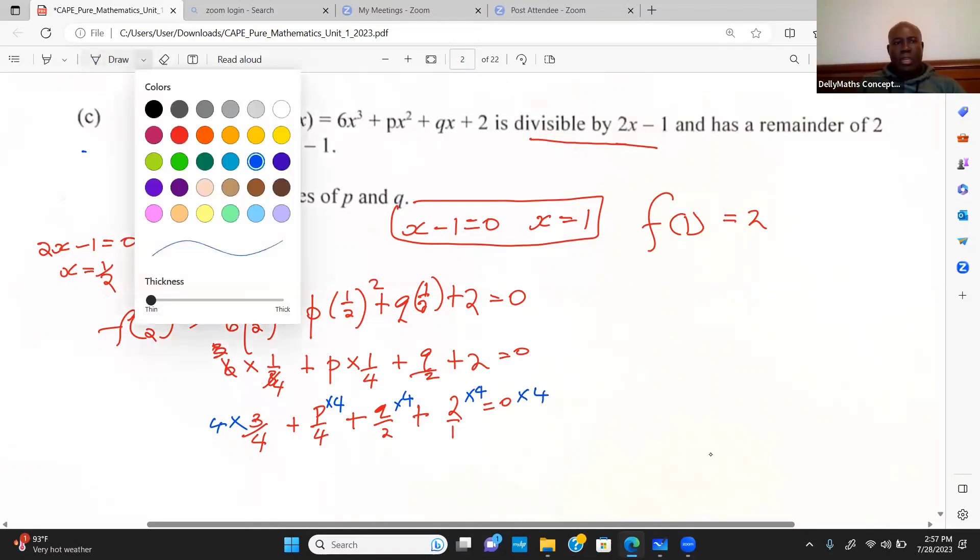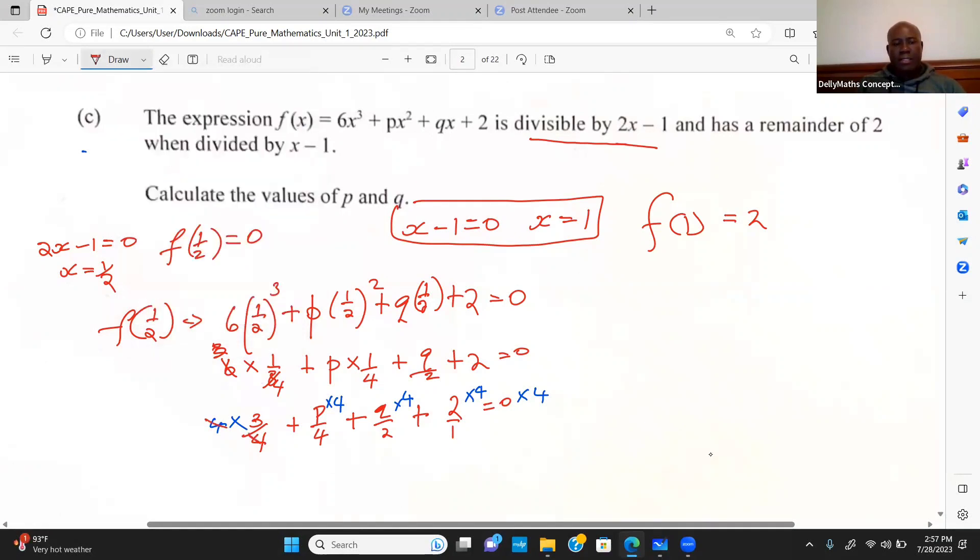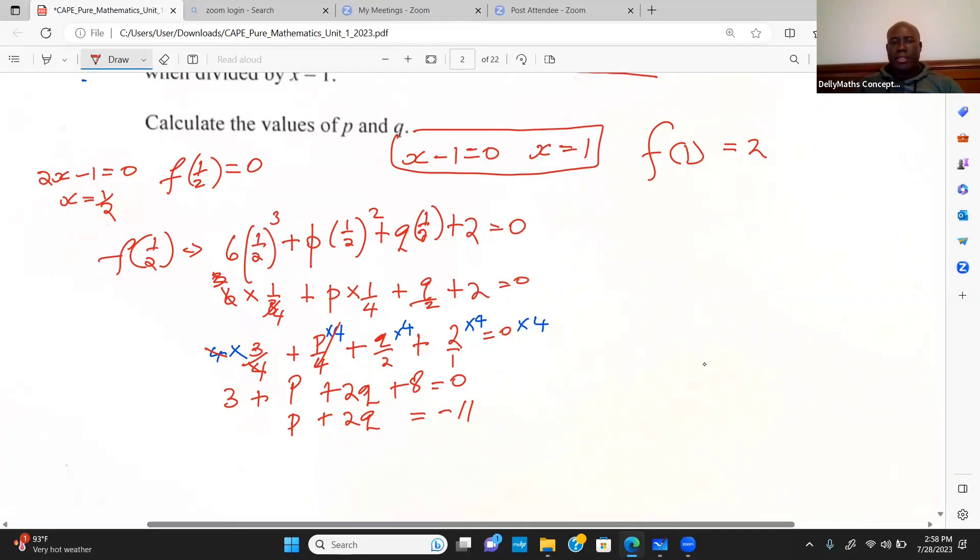What we're looking at now is the 4 would have canceled, so I'm going to have 3 plus p plus 2q plus 8 equals 0. I'm going to keep my variables on one side, so I definitely have p plus 2q. If I add the 3 and the 8, that's 11, and on the other side it's minus 11. This is equation 1, where I get the 11 from 3 plus 8.